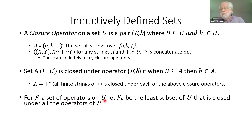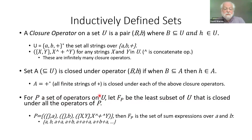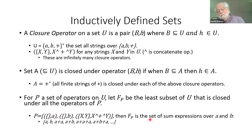If P is a set of operators on U, then let's define F_P as the least subset of U that is closed under all the operators of P. An example: take the infinitely many operators that put plus between two elements, and also put A and B in the set. The least set closed under all of these operators is the set of plus-expressions over A and B.